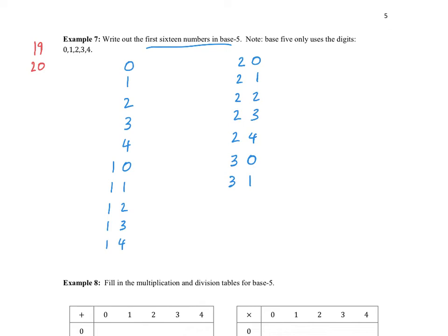Let's count a little bit further to get to the next digit placement. We count 3, 2; 3, 3; 3, 4. Then at 3, 4 we count to 4, 0. Then from 4, 0 we count 4, 1; 4, 2; 4, 3; 4, 4. Once we hit 4, 4, there are no more digits to use — we've exhausted all possibilities with two digits. We'd represent the next number, 25, as 1, 0, 0.